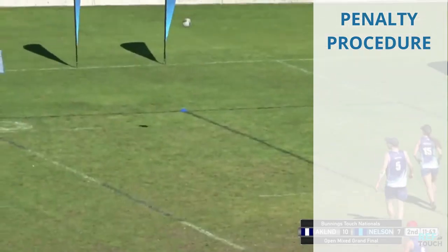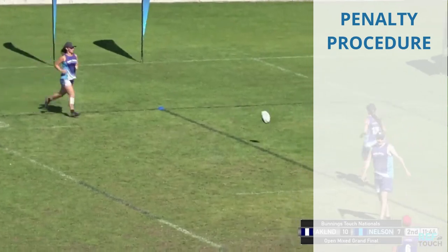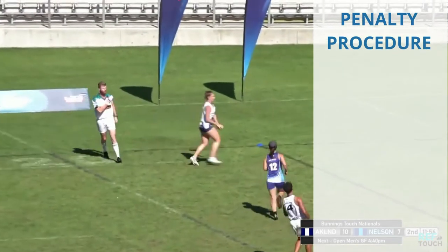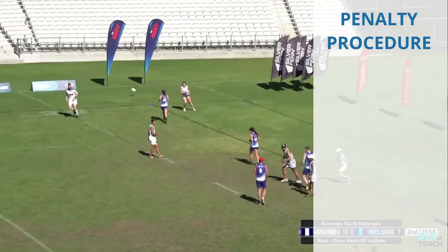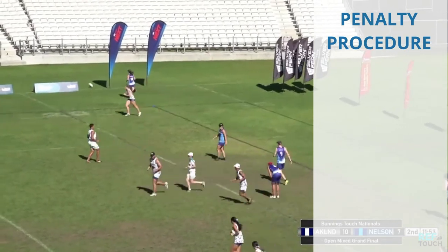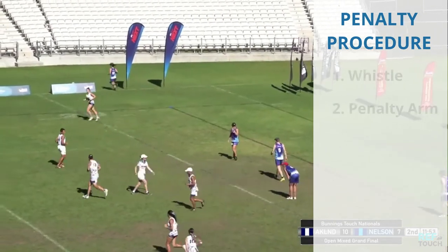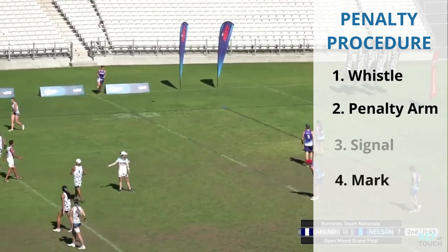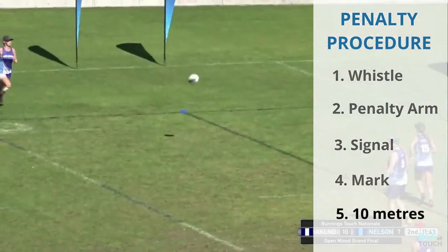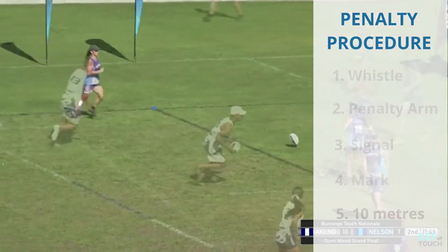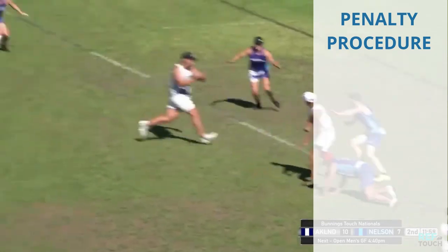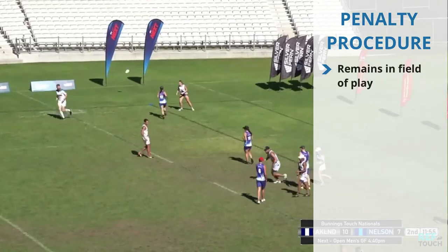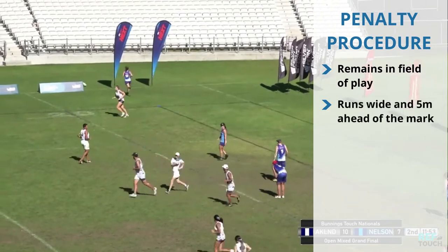This next scenario is also a penalty against the attacking team. This time the referee remains as the control ref. The same principles apply for the procedure, but note that the mark is given a little earlier in this one. This is useful to allow play to recommence if the player is ready on the mark. Remember that as soon as you've given the mark and the player is in position, they can tap and go.